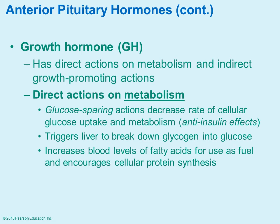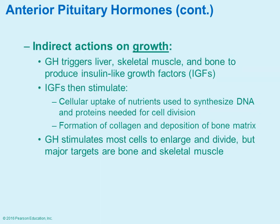Growth hormone has direct effects on metabolism: it triggers the liver to break down glycogen into glucose, tends to increase blood levels of fatty acids, and encourages cellular protein synthesis — generally increasing metabolism. It also has effects on growth, stimulating most cells to enlarge and undergo mitosis. Its main targets are bone and skeletal muscle.